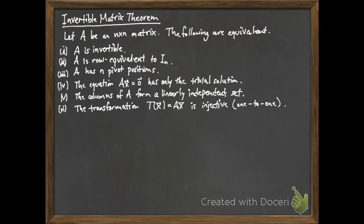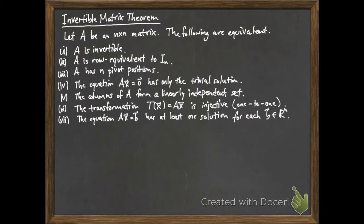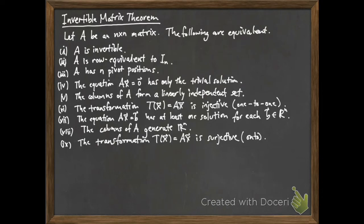Six, the transformation with standard matrix A — the matrix transformation T of X equals AX — is injective. Seven, the matrix equation AX equals B is consistent for every vector B in Rn, so it has at least one solution. Eight, the columns of A generate Rn, or span Rn.